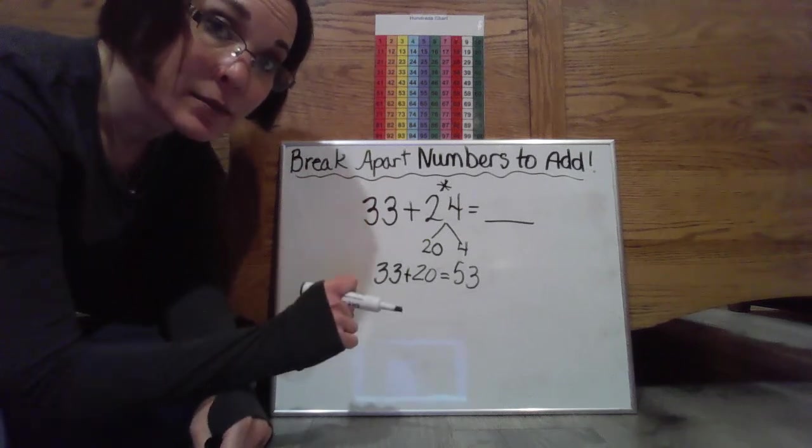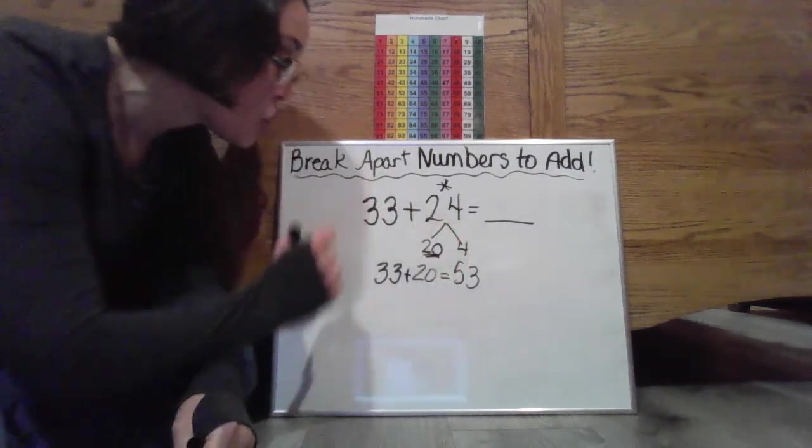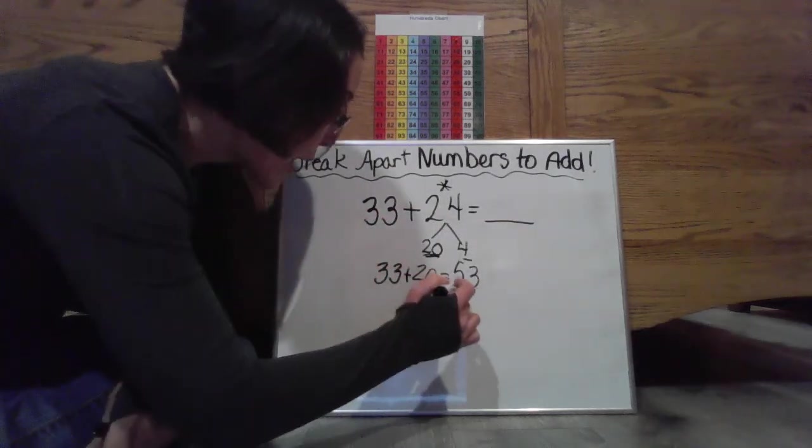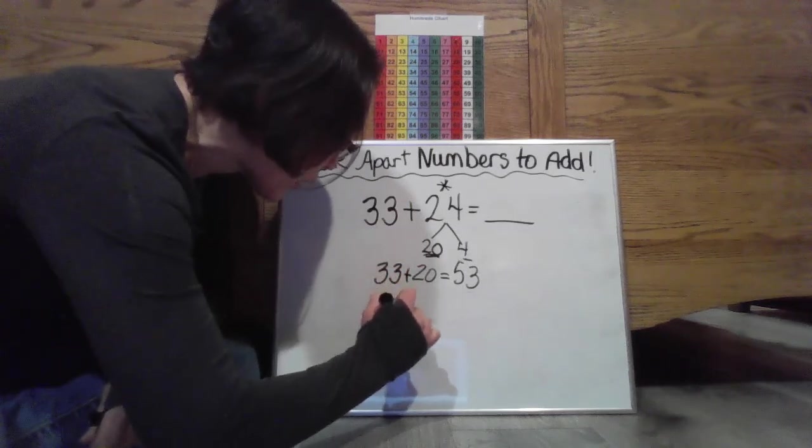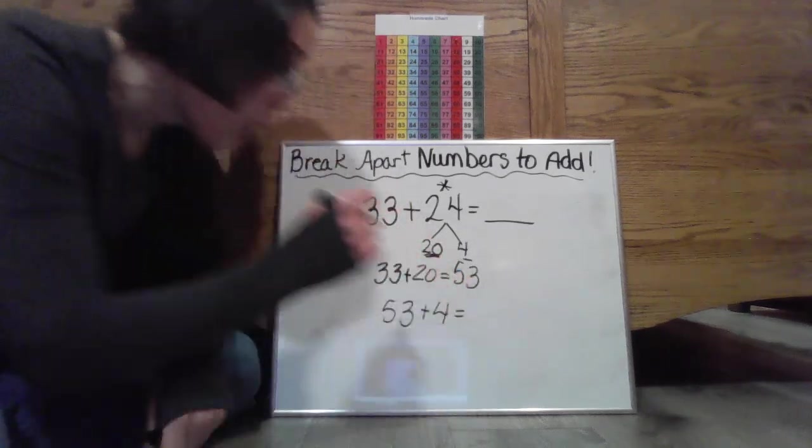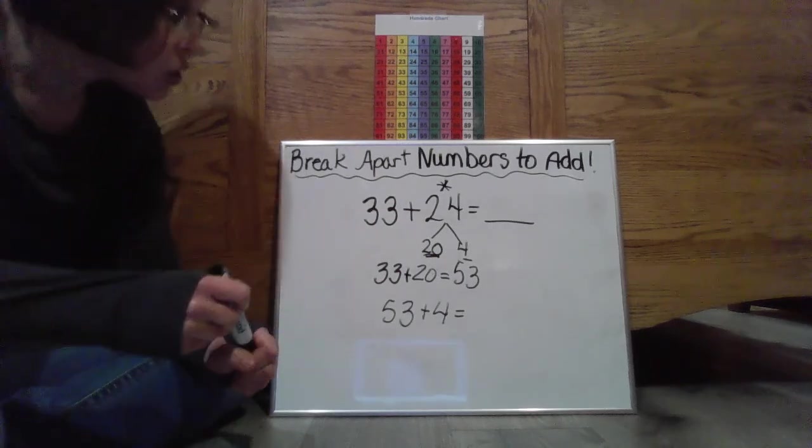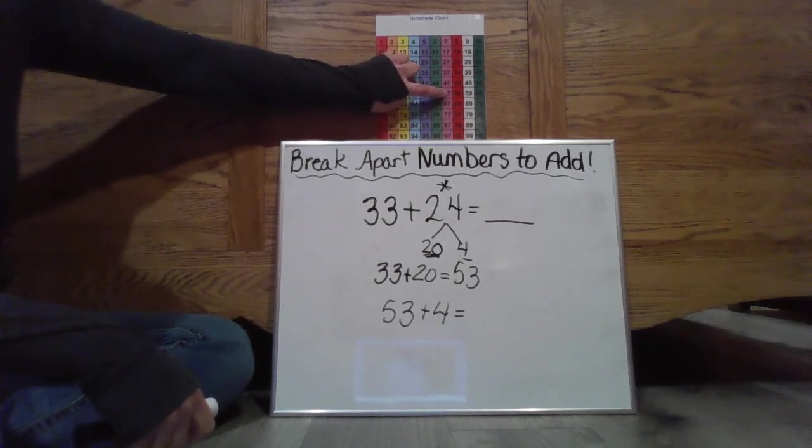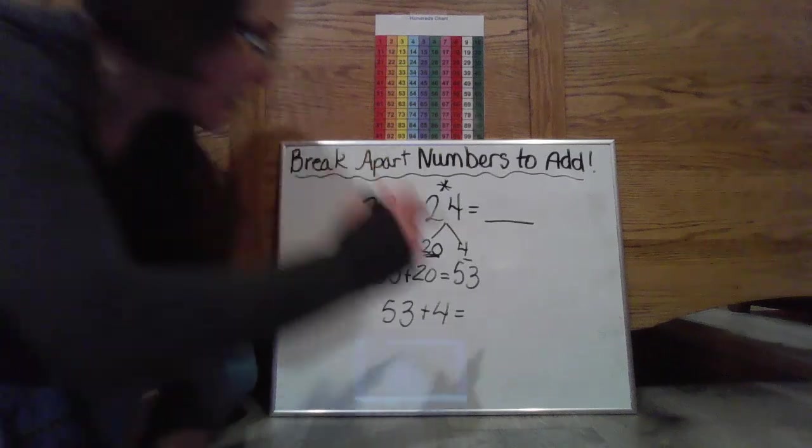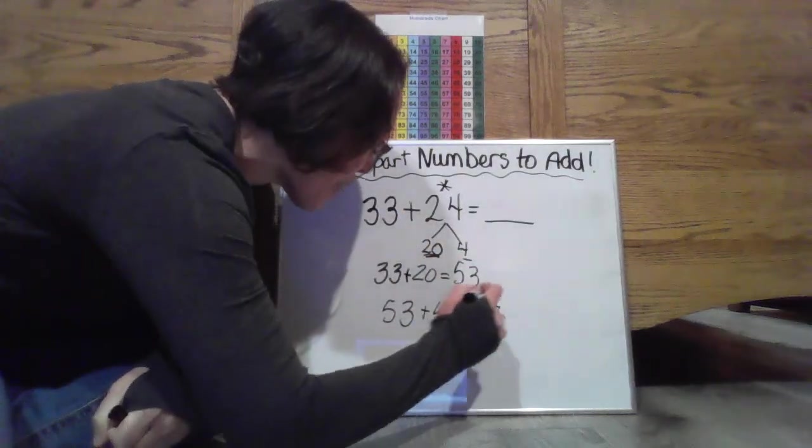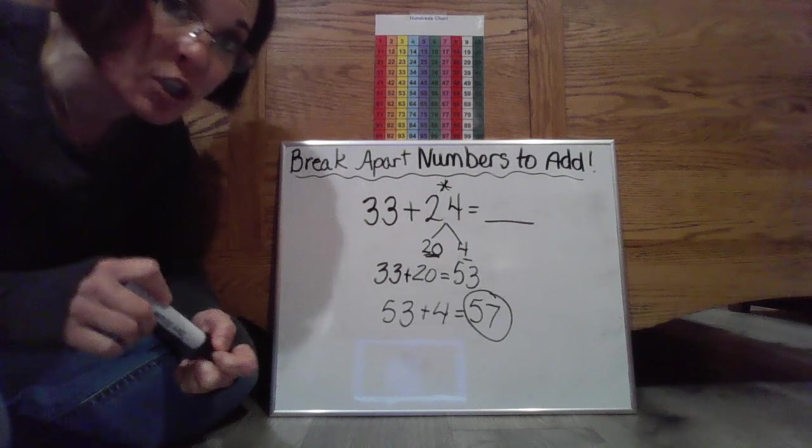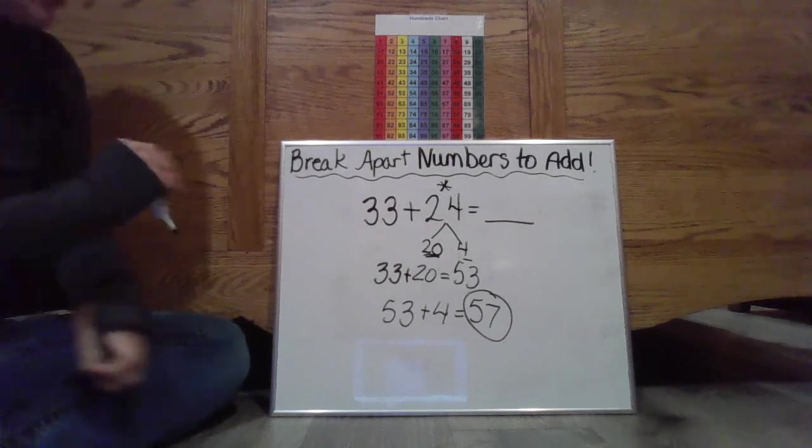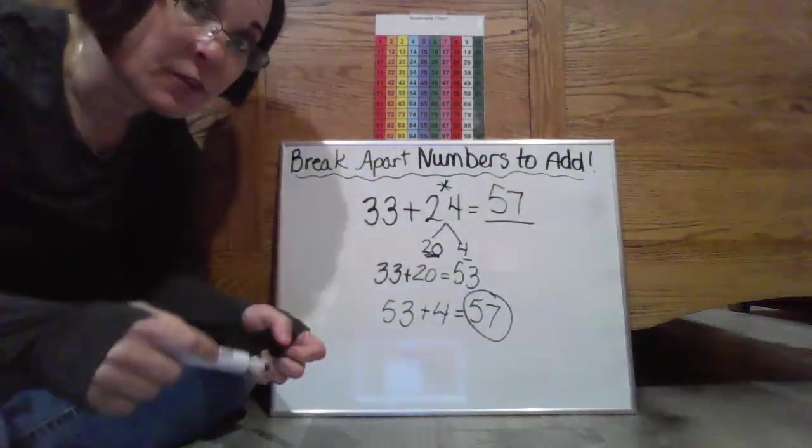But I'm not done yet. Remember I added this 20 now I got to add that 4, those four ones. So now I have to take 53 plus four more ones. So I'm at 53. Now I'm going to do four more. One, two, three, four. So now I'm going to be at 57. That is going to be my complete solution. That's going to be my complete sum. I'm totally done.